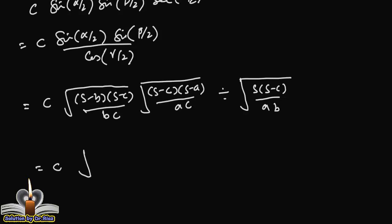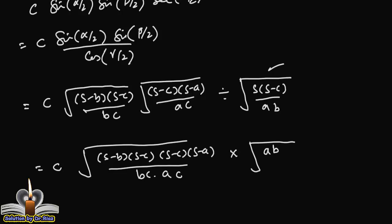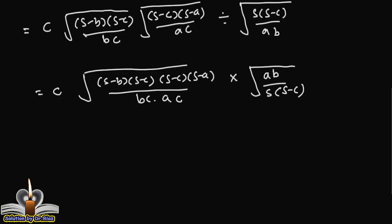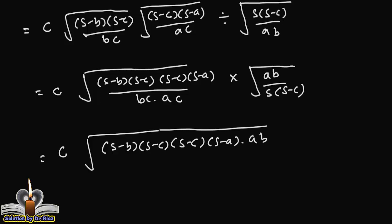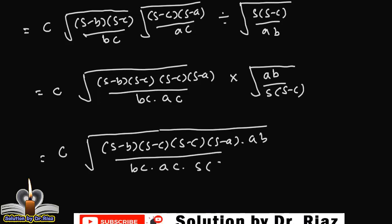Now, a, b, s minus b, s minus c, and s minus a over bc into ac. Converting divide to multiply, inverting the fraction, ab over s into s minus c. This is s minus b, s minus c into s minus c into s minus a into ab over bc into ac into s into s minus c.